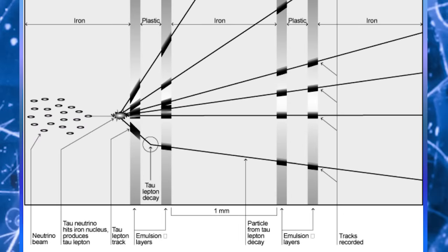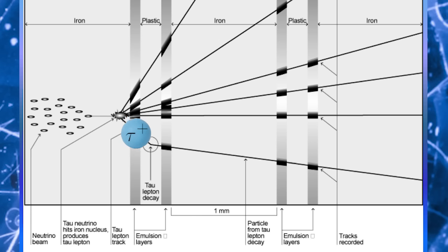So we now understand how to detect the interactions of Tau neutrinos, but that raises the obvious next question: why has nobody done this for Tau anti-neutrinos? Tau anti-neutrinos should have a similar interaction with matter as a Tau neutrino does. The only difference is that while a Tau neutrino interaction with an atomic nucleus produces a negatively charged Tau lepton, a Tau anti-neutrino interaction produces a positively charged anti-Tau lepton. However, we should still be able to detect that charged track in an emulsion detector, look for its decay kink, and identify the interaction of Tau anti-neutrinos in a similar way to how DONUT detected Tau neutrino interactions.